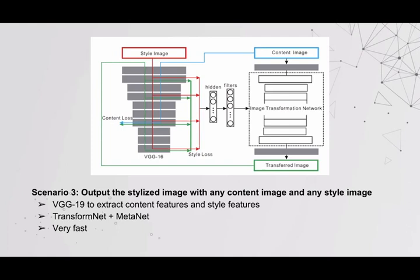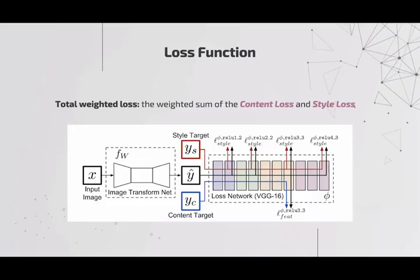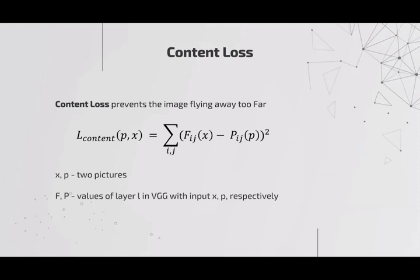So the key is how do we define our loss function? The loss function has two major parts: content loss and style loss. The major mechanism is shown in the diagram. For content loss, we feed two images — one original, one being transferred — into VGGNet, then take the mean square loss of the two outputs and sum it.